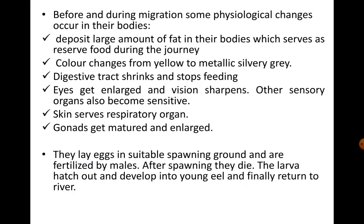Before and during migration, eels exhibit physiological changes. They deposit large amounts of fat in their bodies, which serve as reserve food during the journey. The colour changes from yellow to metallic silver-grey, and the digestive tract shrinks and they stop feeding. Eyes get enlarged and vision becomes sharpened. Other sensory organs also become more sensitive. The skin serves as a respiratory organ. Gonads get matured and enlarged. They lay eggs in suitable spawning grounds, which are fertilized by males. After spawning, the adults die — perhaps because they do not feed for the long duration of migration.